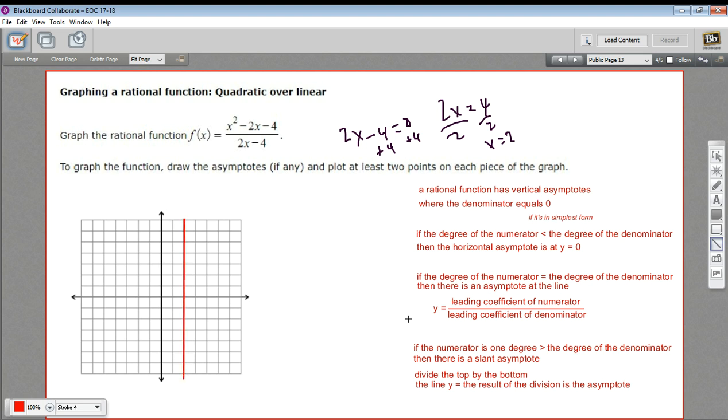Now, the horizontal or slant asymptotes are determined by the degree of the top and the bottom and comparing them. So if the degree of the numerator is less than the denominator, you have an asymptote at y equals 0. That's not the case here. Our degree is 2 on top because we have x squared, and it's 1 on the bottom because we just have an x.